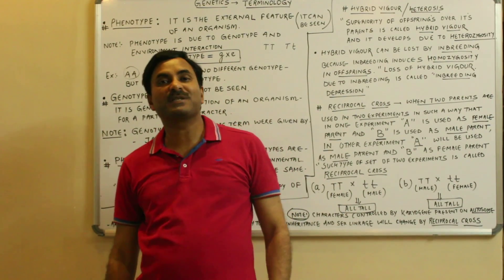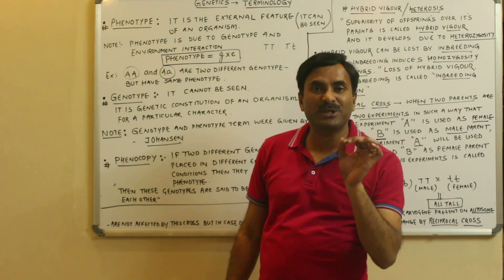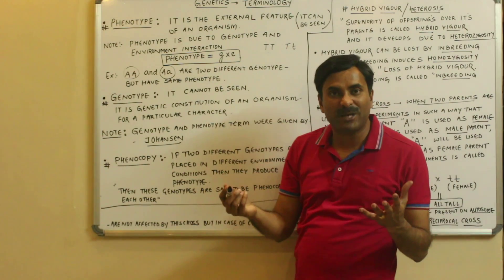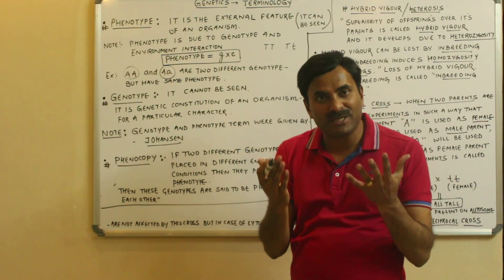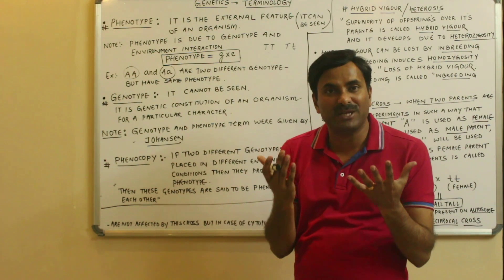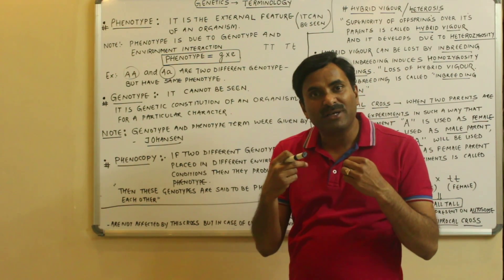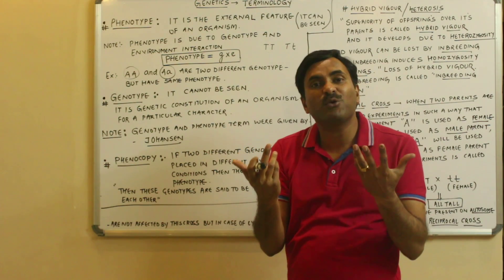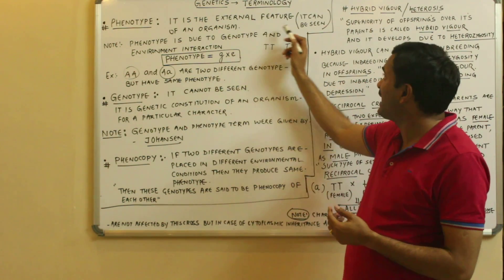Today we are going to discuss some important terminologies related to genetics. The very first term is phenotype. Phenotype is the external makeup of an organism — it represents the morphology of an organism and can be seen from outside. For example, if I am tall, it is visible that I am tall, so that is the phenotype of an organism.